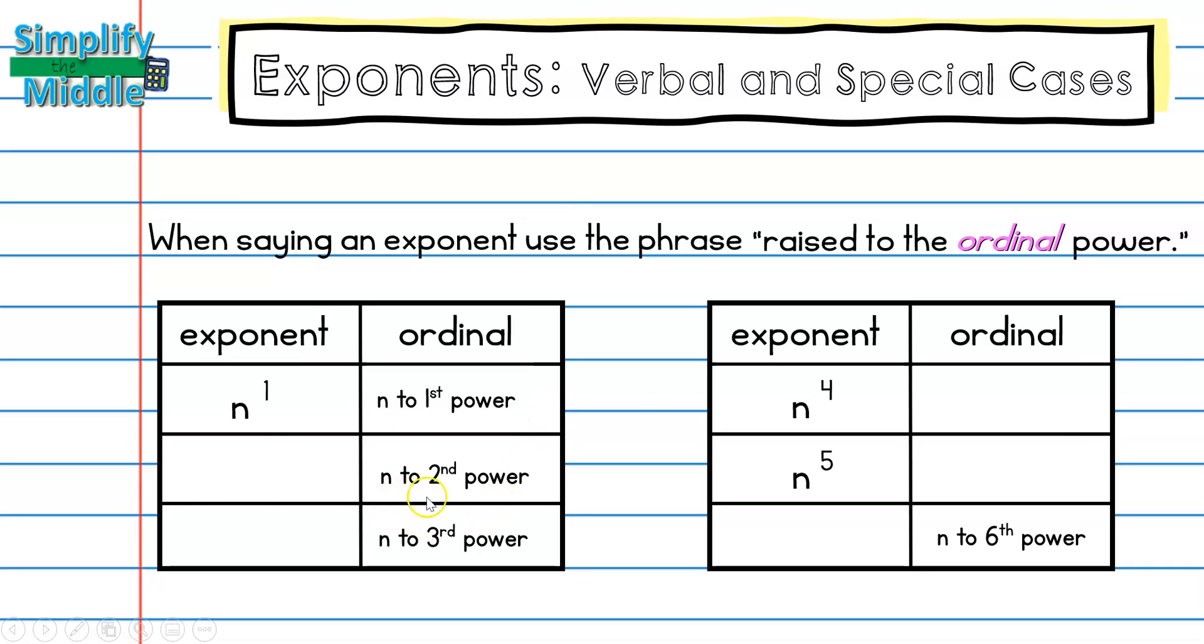So naturally, n to the second power would be a base of n and an exponent of 2. n to the third power would be a base of n and an exponent of 3. Pause the video and see if you can fill the rest of this chart in.